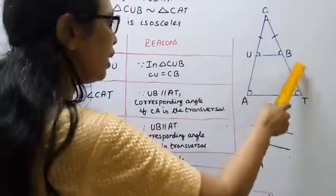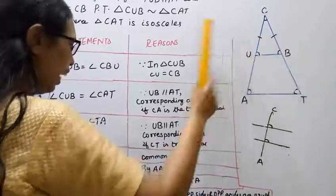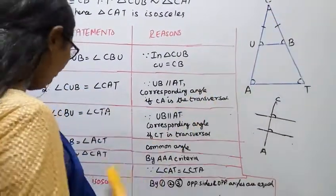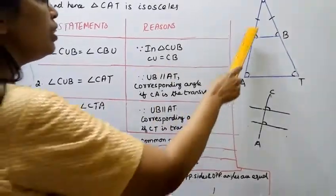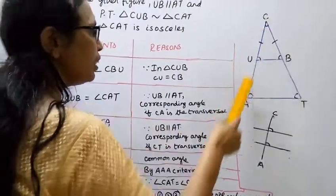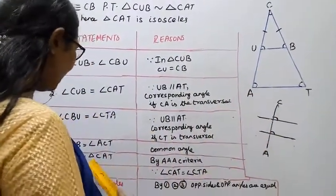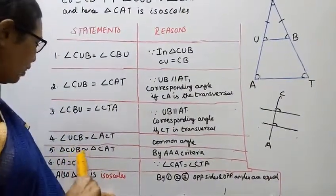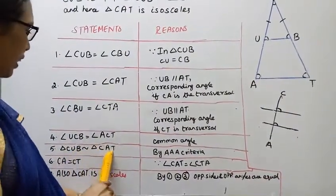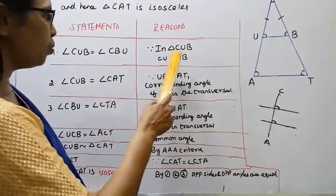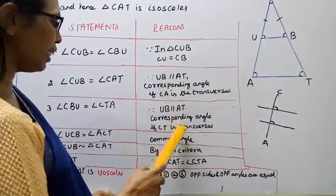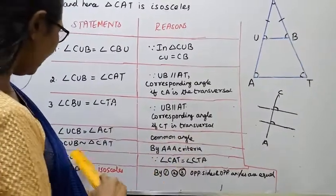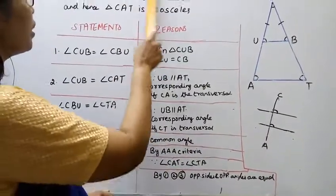UCB equals ACT. And the common angle: angle C is the common angle. That is why triangle CUB and triangle CAT — we have proved they are similar. Triangle CUB is similar to triangle CAT, by the AAA criteria. These two triangles are similar — proved.